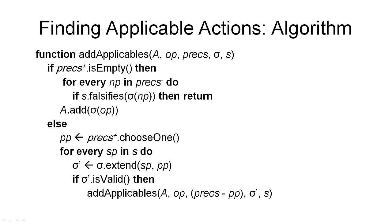The function add-applicable takes five parameters. The first is A, the set of actions, which is initially empty — this is the set in which we collect the applicable actions. Then we give it an operator whose applicable instances we seek. We have a set of remaining preconditions, so these are the preconditions we still need to look at; initially these are all the preconditions of the operator. Then we have a substitution for the variables that are parameters of the operator; initially no variables are replaced by values. And we have the state in which we are trying to apply this operator. The algorithm first deals with all the positive preconditions.